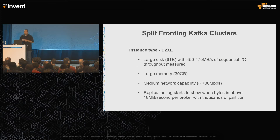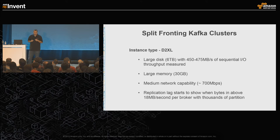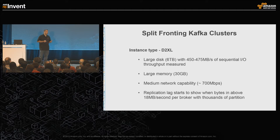Let's take a look at instance types. We ended up going with the D2 XLs — primarily large disk, large memory, medium network. One thing we noticed: once you get around 18 MB per second, replication lag starts to show up. The other thing we had to deal with is Kafka is not necessarily designed to run in the cloud. So how do we make it more native to cloud? Right now, we don't have a clean answer — we over-provision. We over-provision in all regions to handle peak traffic, as well as to handle the case where we need to evacuate any region.